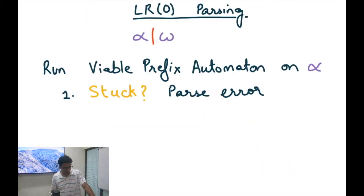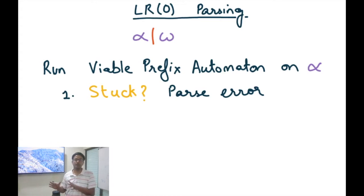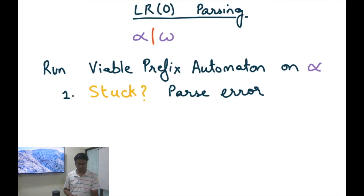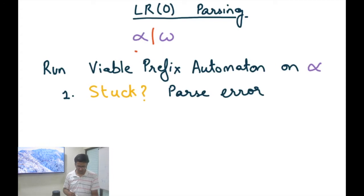We now have an automaton — whether a DFA or an NFA — that can tell us whether some string is a viable prefix. Based on that, we can define our first LR parsing algorithm: the LR0 parsing algorithm. In shift-reduce parsing, at any point we have alpha on the stack, a cursor, and then omega as the unseen input.